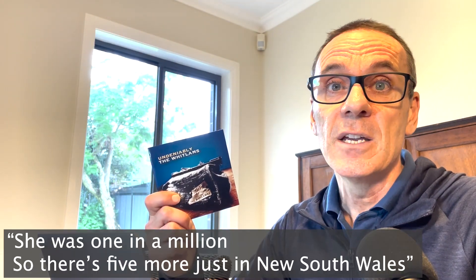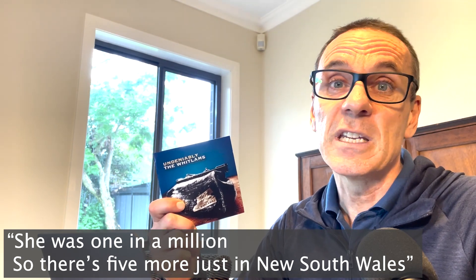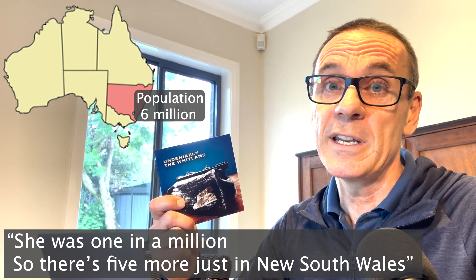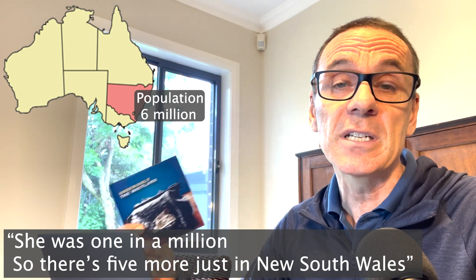How do we make decisions in a world full of random data? Let's take an example of how you decide who to marry. An Australian band called the Whitlams have a song that says she was one in a million, so there's five more just in New South Wales. So is it one in a million? One in a hundred perhaps? How do we decide?